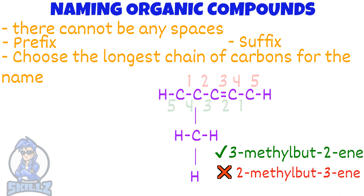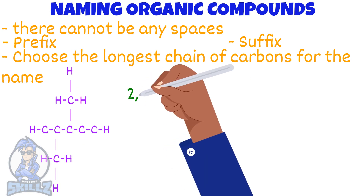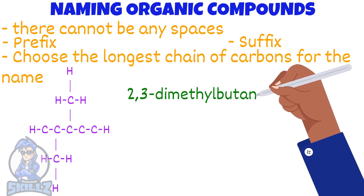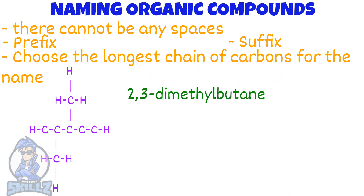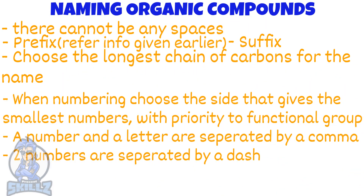Next, let's say there isn't a double bond, but there is another methyl branch. Then we get 2,3-dimethylbutane. Another thing you must notice is, if there is a number and a letter, it is separated by a dash, since there can be no spaces. If there are two numbers, they are separated by a comma. Here are all the points you must know when it comes to naming organic compounds.